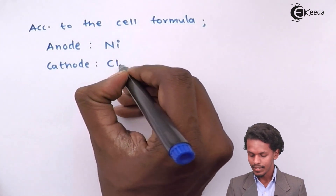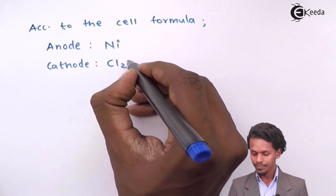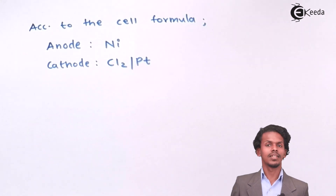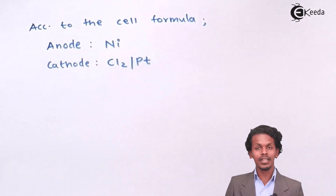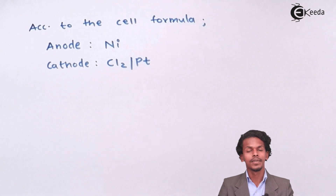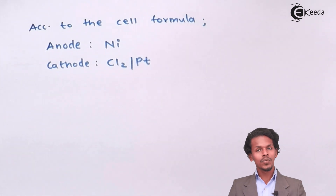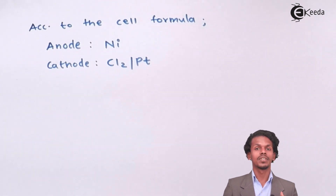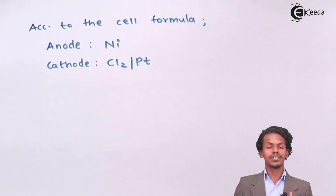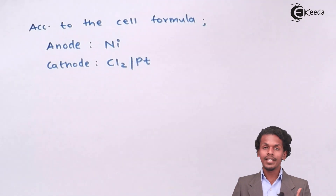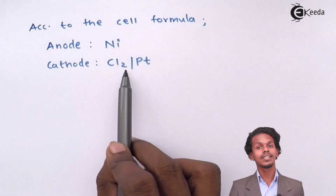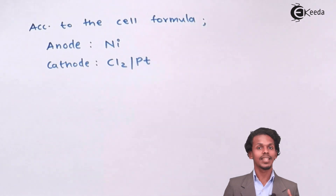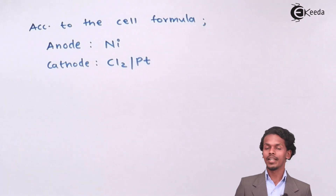Platinum is being used as an inert electrode on which Cl₂ gas — that is, chlorine gas — is acting as the cathode. Platinum has no role in getting decomposed or having elements deposited on it; the main species is Cl₂ acting as the cathode with the help of platinum.